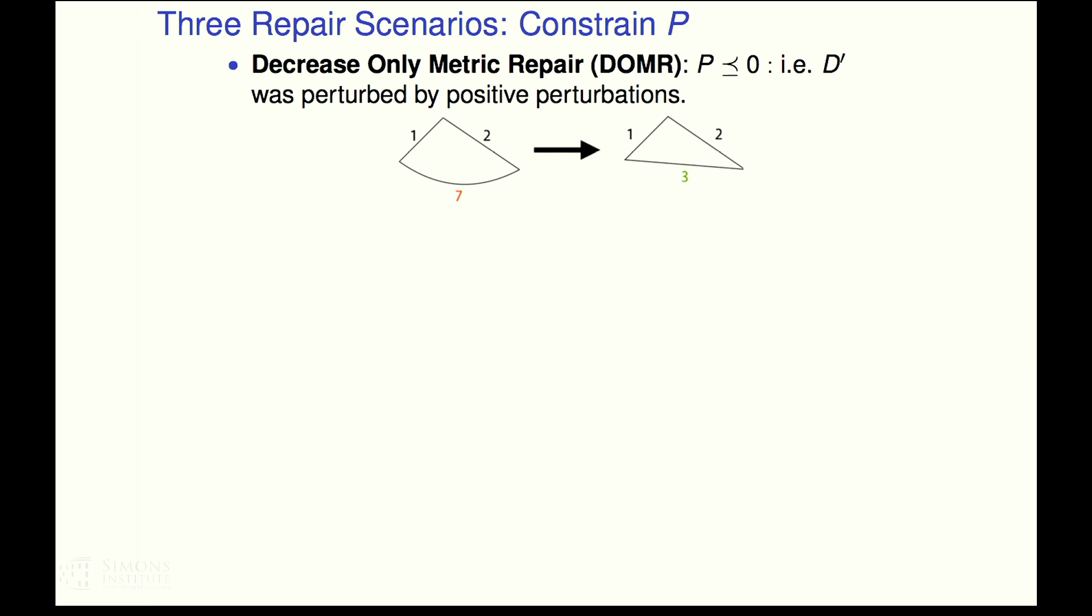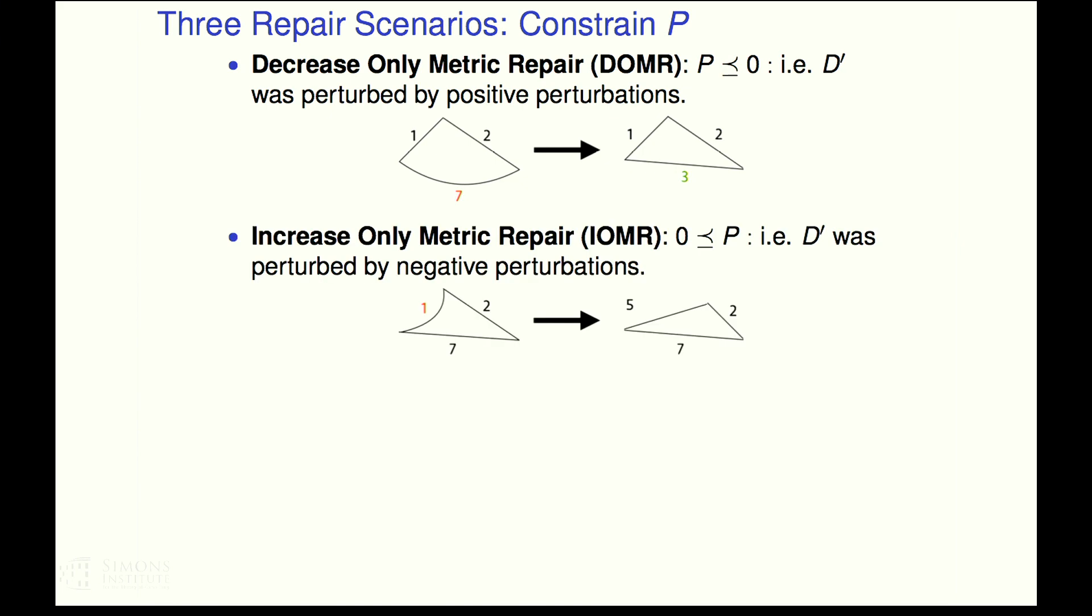So the first one we're going to call decrease only metric repair. In other words, our perturbations should only shrink distances that are wrong. And so here's this triangle, one, two, seven. And the correct fix should be to shrink seven. And we get a proper triangle. We could do something else.